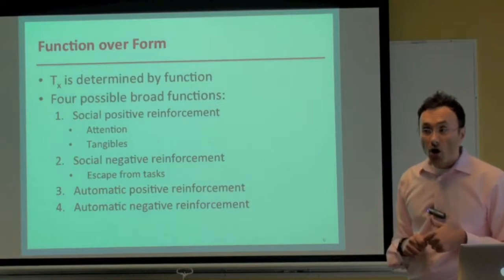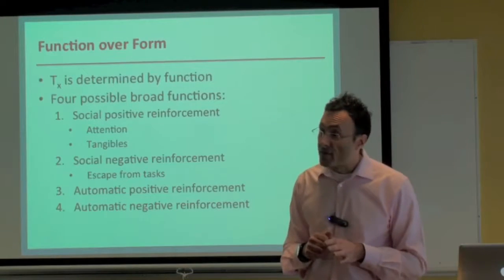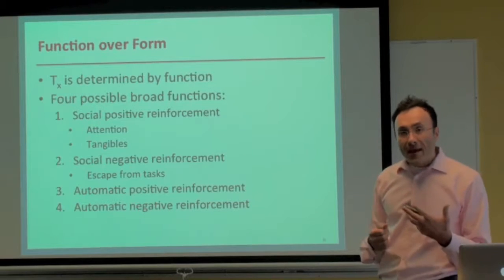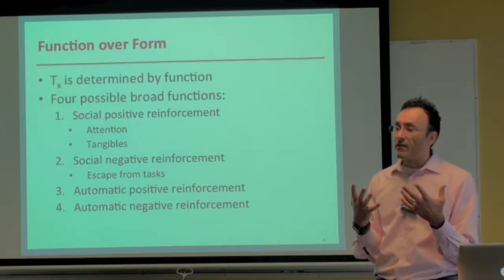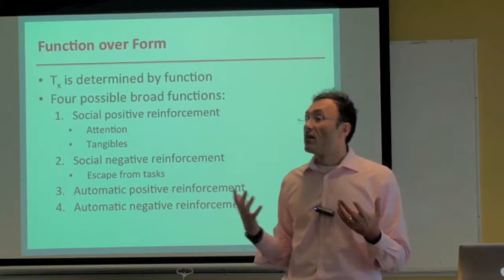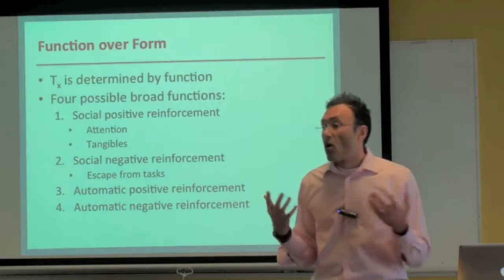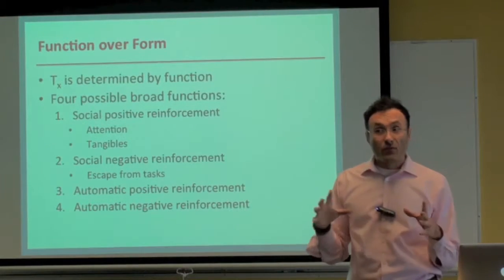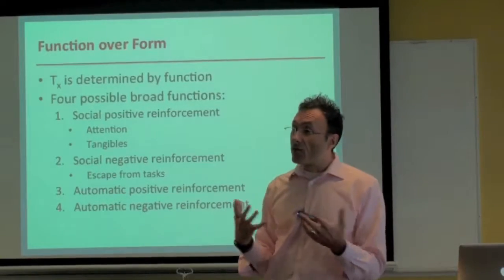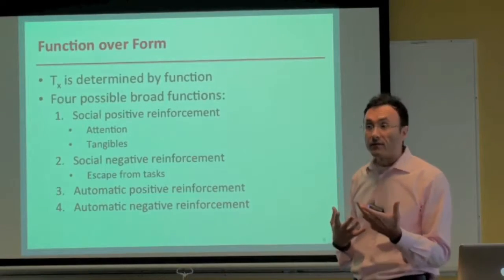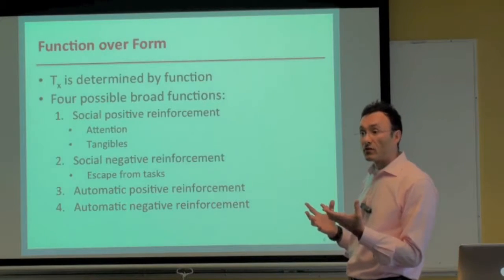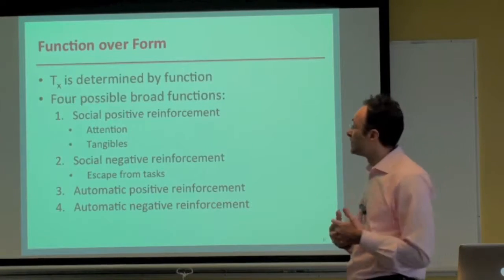Then there are two automatic reinforcers: automatic positive and automatic negative. Automatic positive refers to doing a behavior and, as a result, feeling some self-pleasure. On the way here today, I had the radio on and was humming in the car — that humming could be an example of automatic positive reinforcement. Nobody else was providing the reinforcement; I was producing it myself.